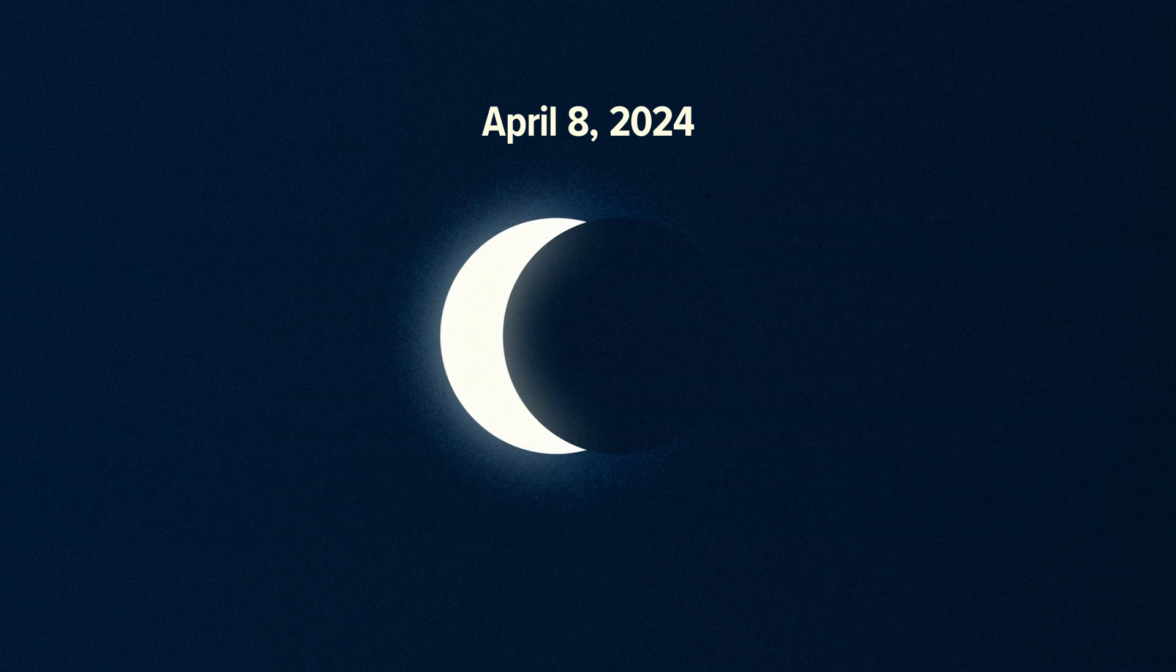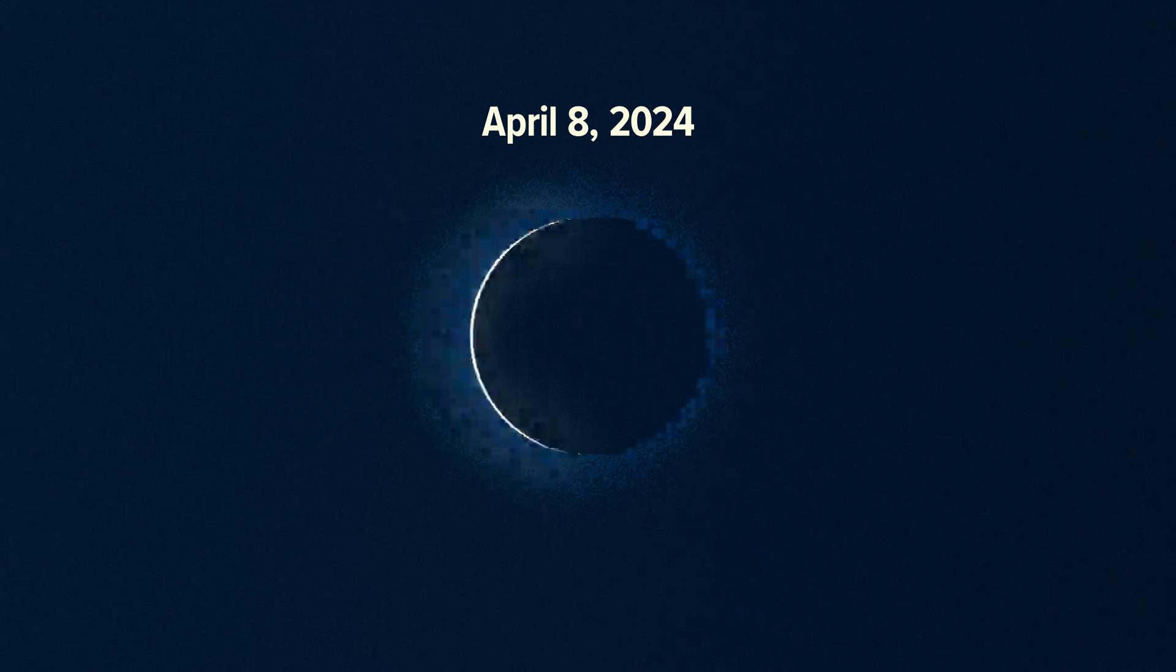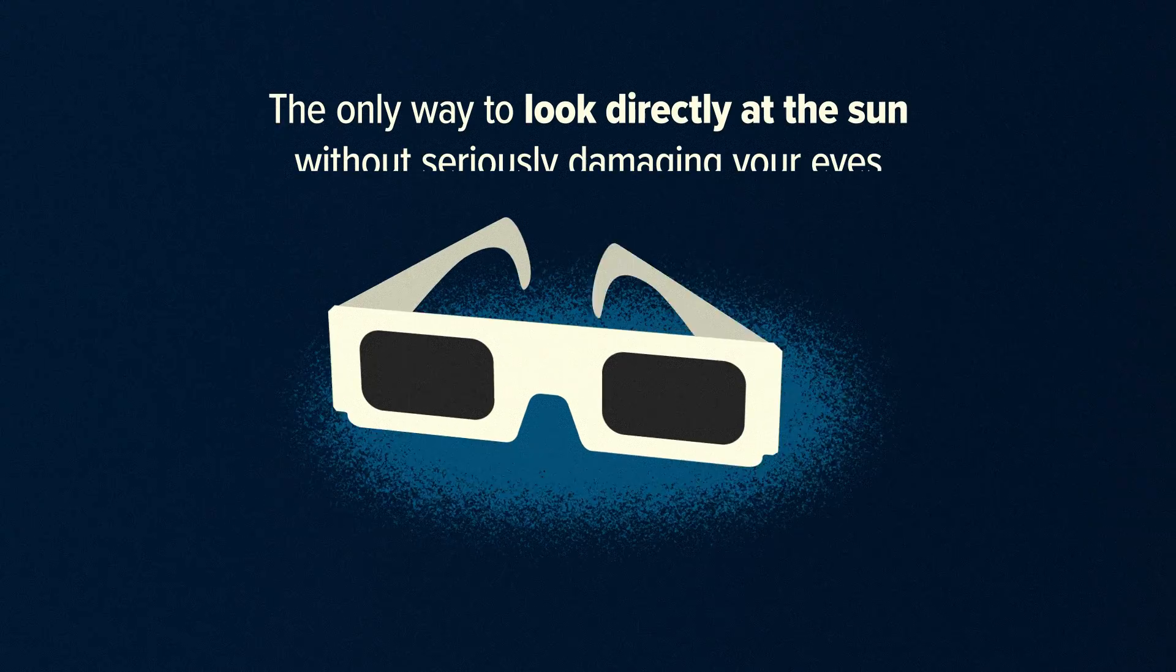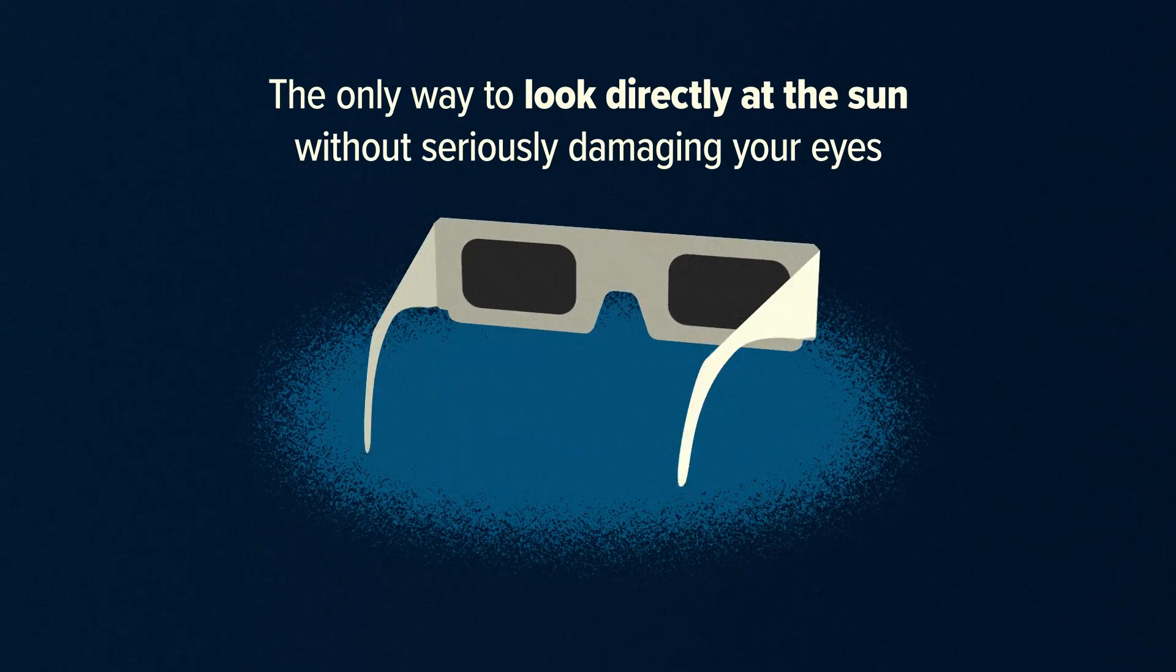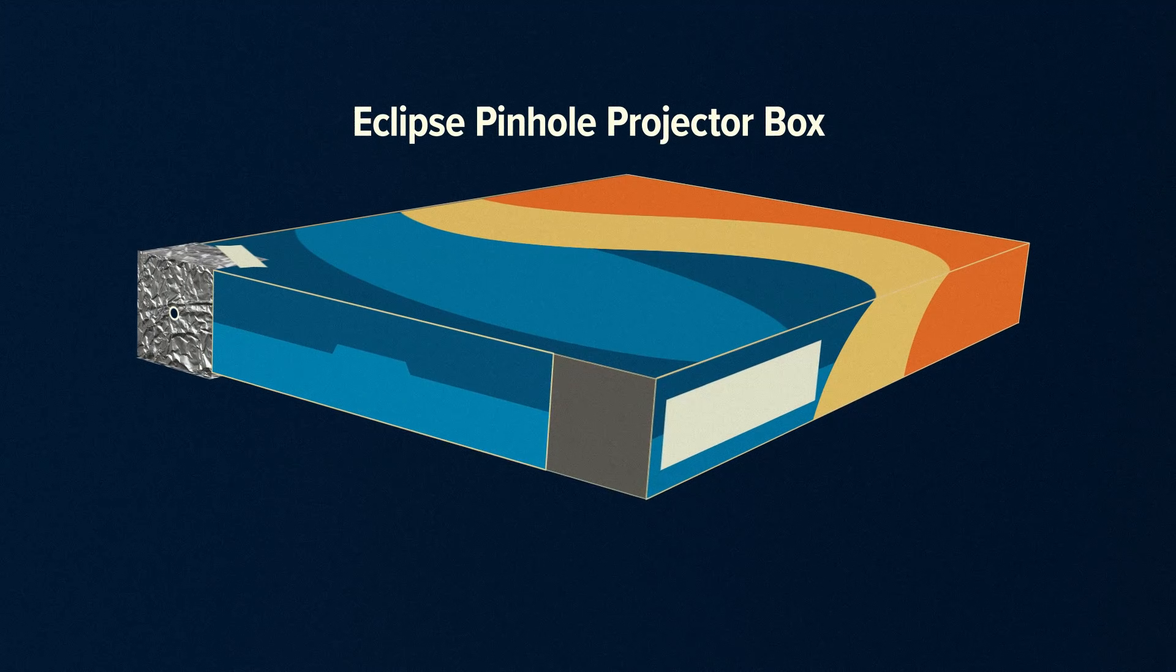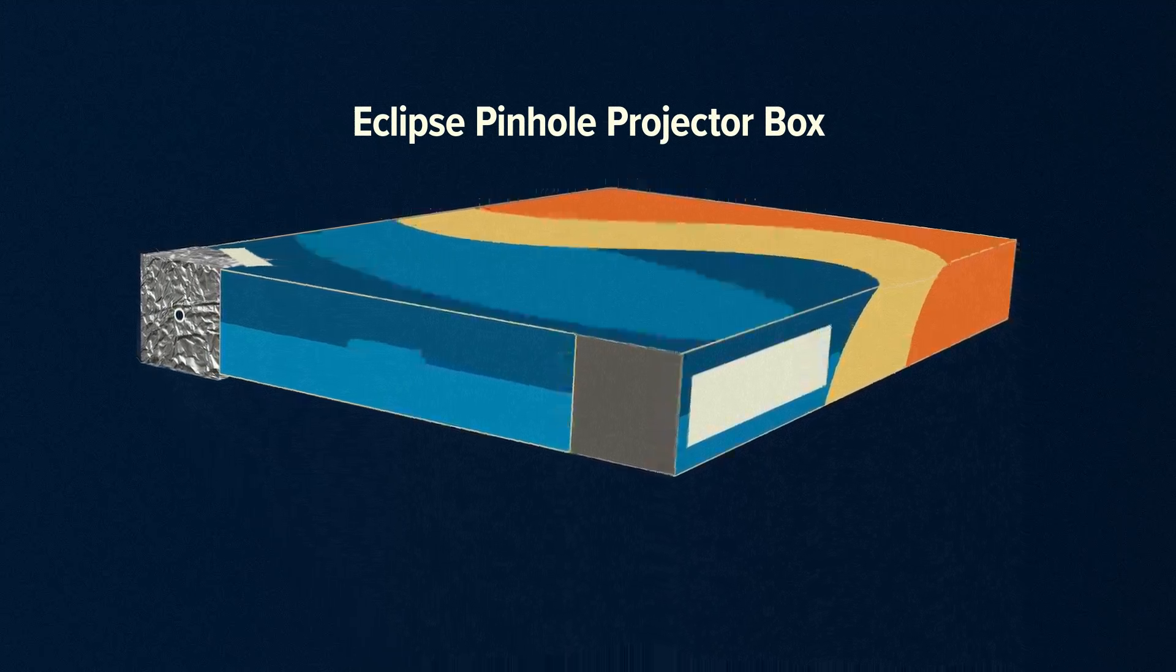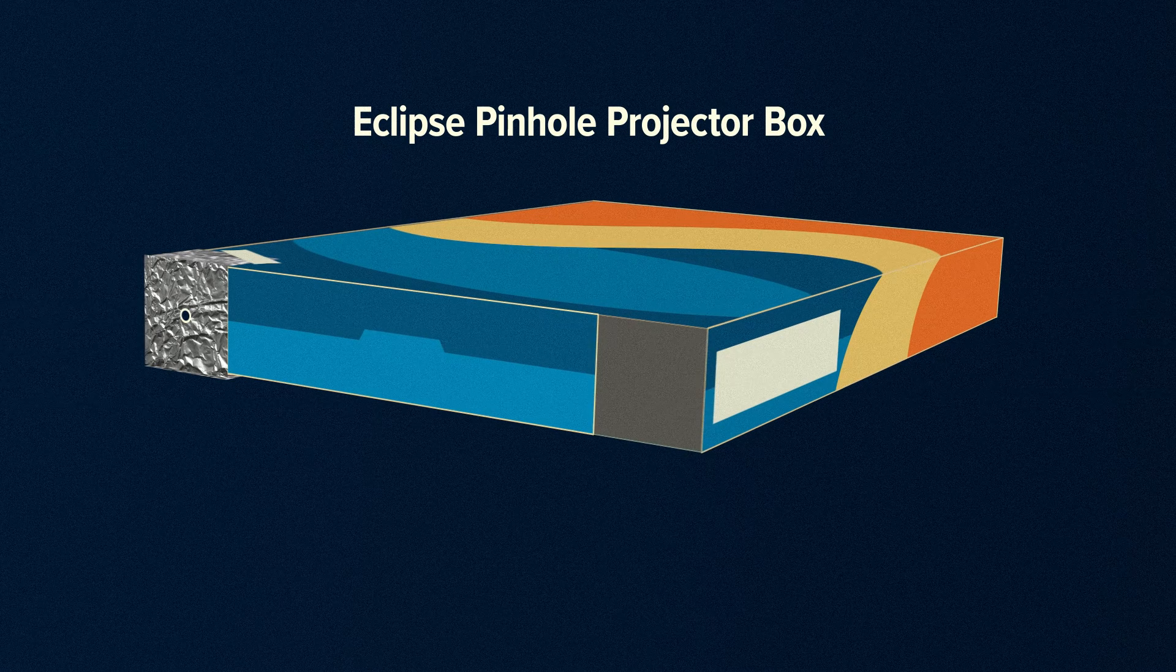Time is running out to get your solar glasses for safe viewing of the Great American Eclipse. Those shades are the only way to look directly at the sun without seriously damaging your eyes. But if you can't get your hands on those, you can make an Eclipse pinhole projector box at home, which can be a fun project for the whole family.